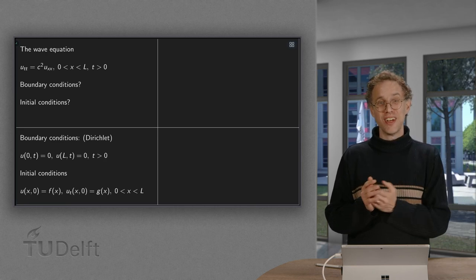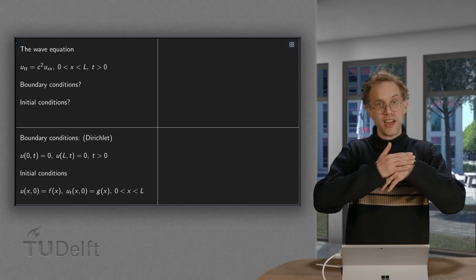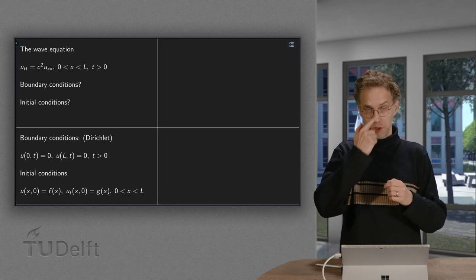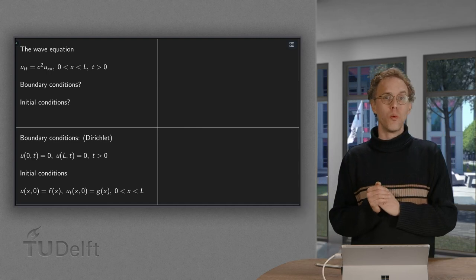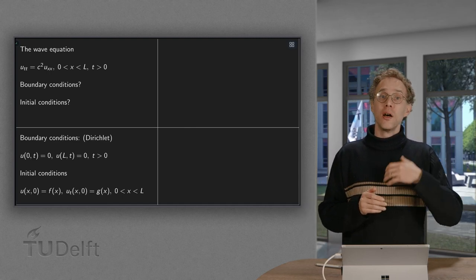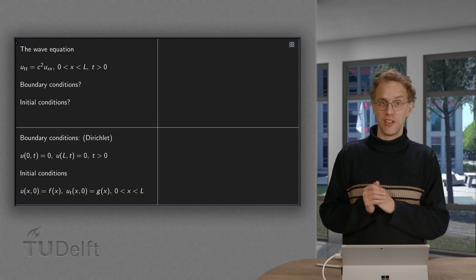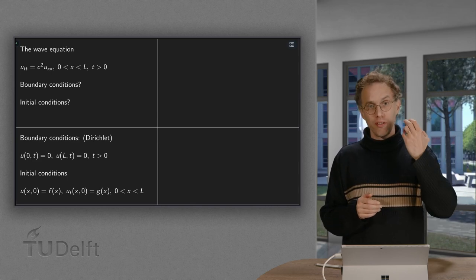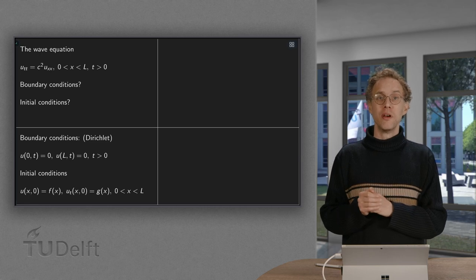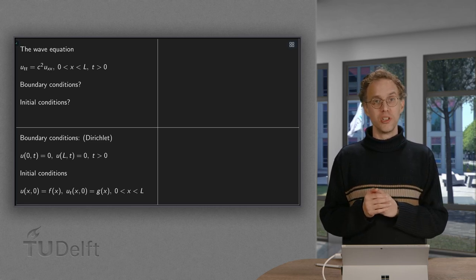What about initial conditions? Well, for the heat equation we only needed to specify the initial temperature distribution. We only needed one function. That was because we had only a first derivative with respect to time. Now we have a second derivative with respect to time, which means that we need two initial conditions.